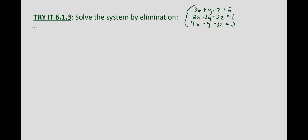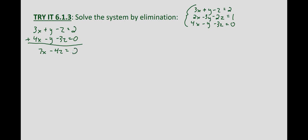So I'll write down 3x + y - z = 2, and 4x - y - 3z = 0. If we add those equations: 4 + 3 is 7x, -z - 3z is -4z, and 2 + 0 is 2. So we get 7x - 4z = 2.